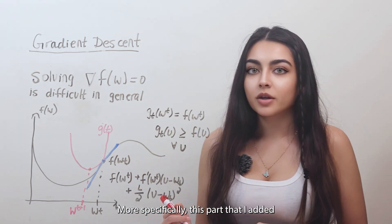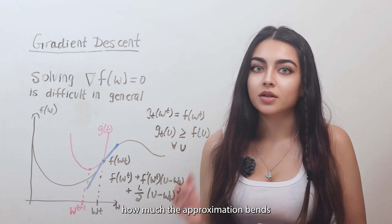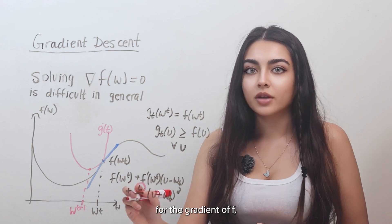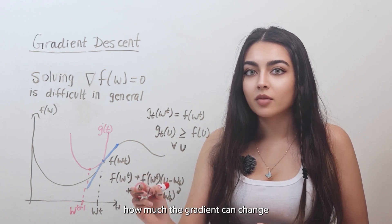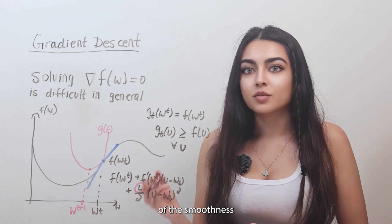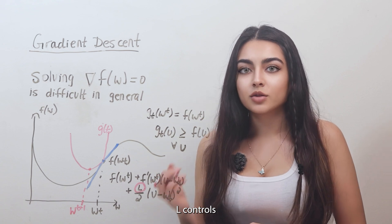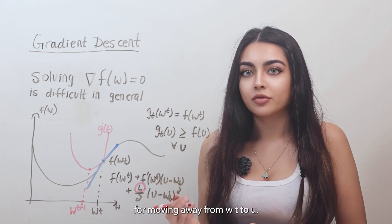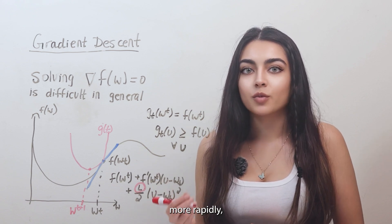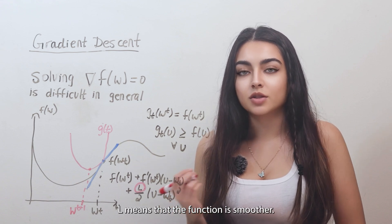More specifically, this part that I added is the second order term that controls how much the approximation bends or curves. This constant L is the Lipschitz constant for the gradient of f, which bounds how much the gradient can change between different points. L is essentially a measure of the smoothness of the function f, specifically how quickly its gradient changes. L controls how much penalty is applied for moving away from wt to u. A larger L means that the function changes more rapidly or that it is less smooth, while a smaller L means that the function is smoother.